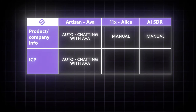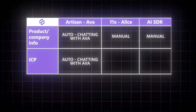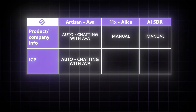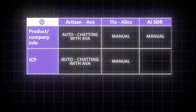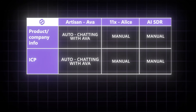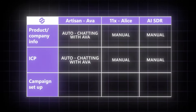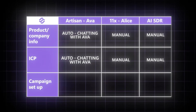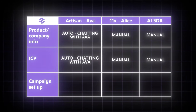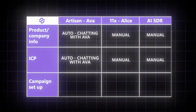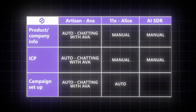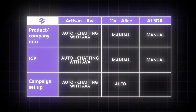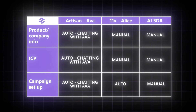ICP is also automatically set up by chatting with Ava, but for the other two apps, you'll have to do it manually by adjusting the filters to your liking. Lastly, the campaigns will be automatically set up after you're done with your product and ICP info for both Ava and Alice. But on AI SDR, you'll have to set up the campaigns manually.